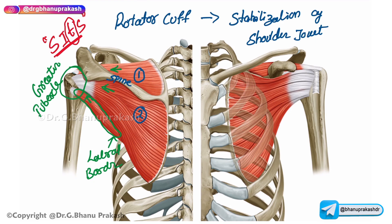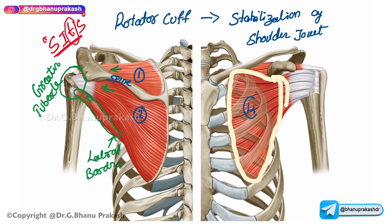The fourth muscle, subscapularis, takes its origin from the subscapular fossa — the entire ventral surface of the scapula. Its insertion is at the lesser tubercle of the humerus. So to summarize: supraspinatus, infraspinatus, and teres minor insert at the greater tubercle, while subscapularis inserts at the lesser tubercle.